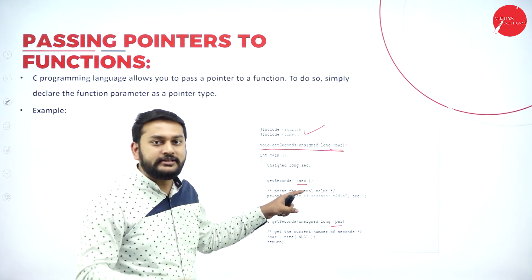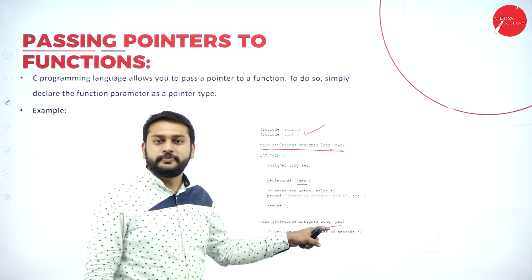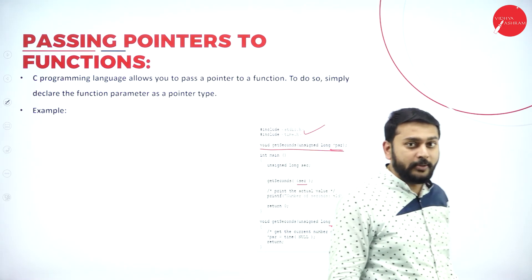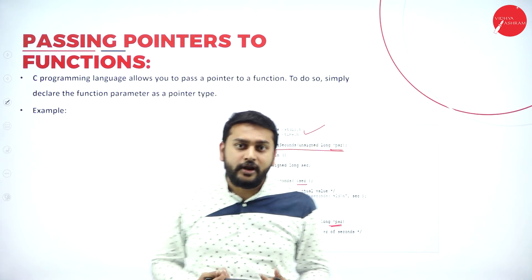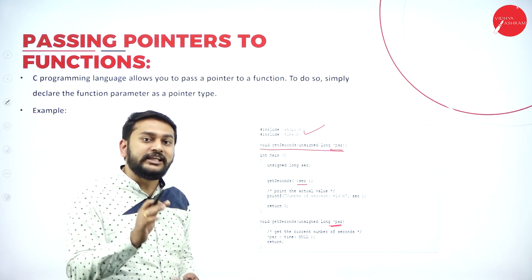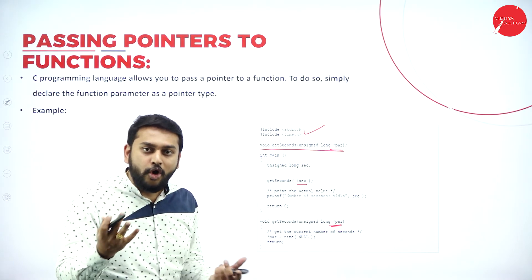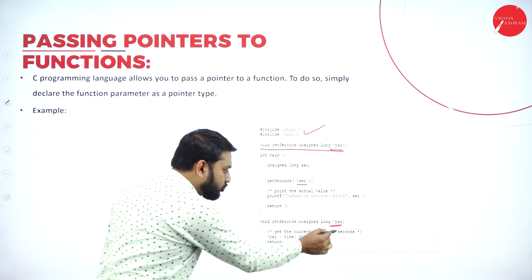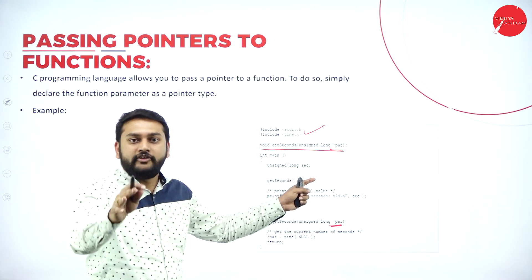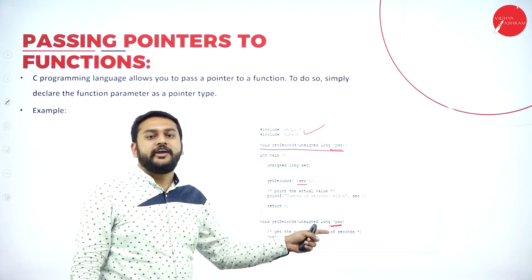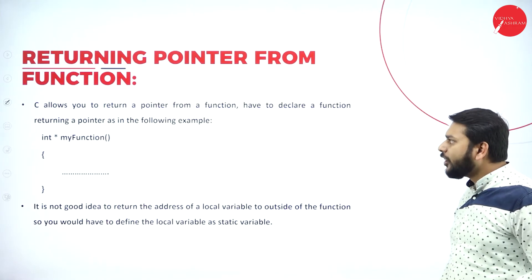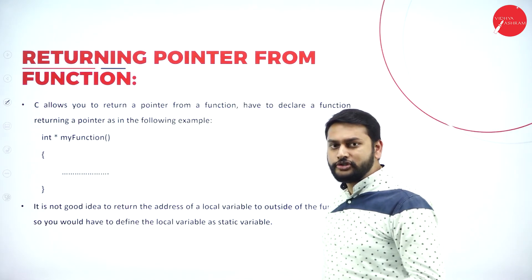Why must I have a pointer variable? Because the only variable that has the capacity to store the address of another variable is a pointer. That's why if you pass an address, you need a pointer variable in the formal parameters to accept it.